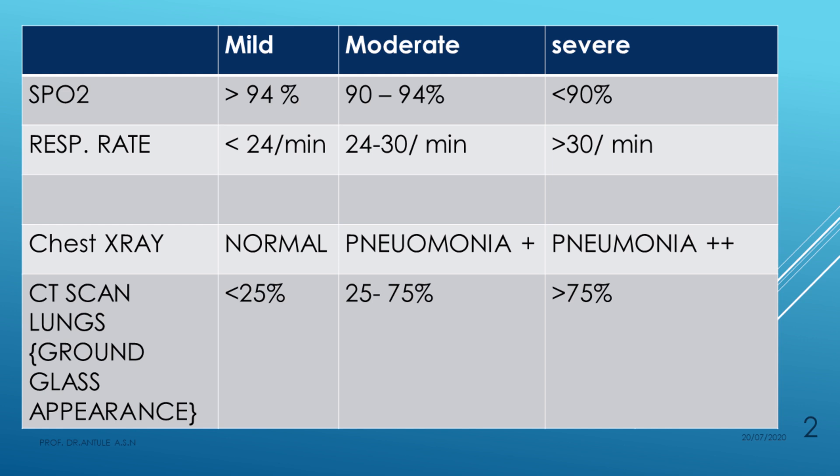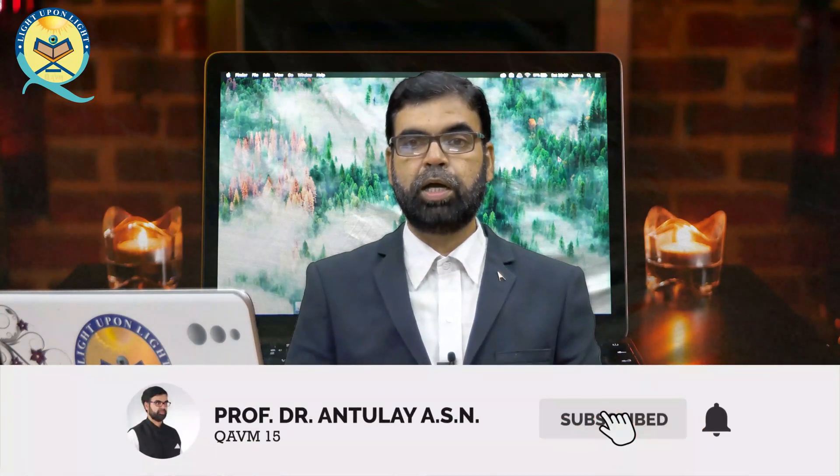For respiratory rate: less than 24 per minute is mild, between 24 to 30 is moderate, and more than 30 per minute is severe. On X-ray, mild cases show nothing, moderate cases show bilateral infiltrates (bilateral pneumonia with less breathlessness), and severe cases show bilateral pneumonia plus plus.